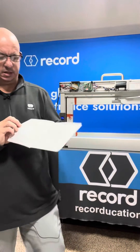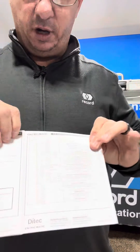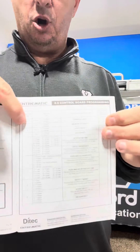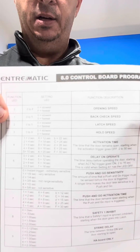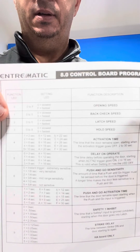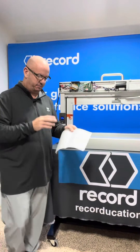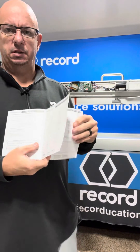The reason I always utilize my book is because your installation manual is going to tell you all of your settings. For example, function on the LED zero is your opening speed. Function one is your back check speed. Two and so forth. It gives you an idea of what you're actually changing when you're in those modes. I know not all of us are going to remember exactly what it is, so they're here.